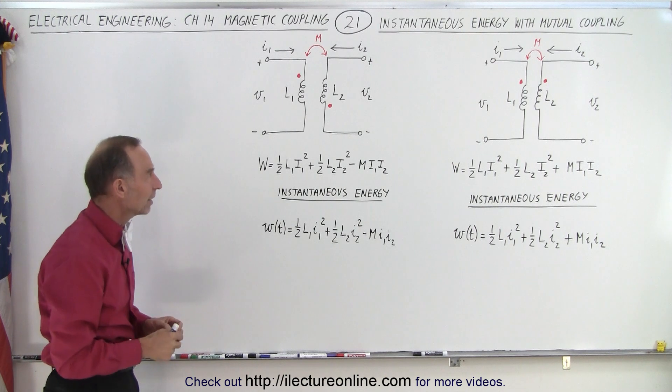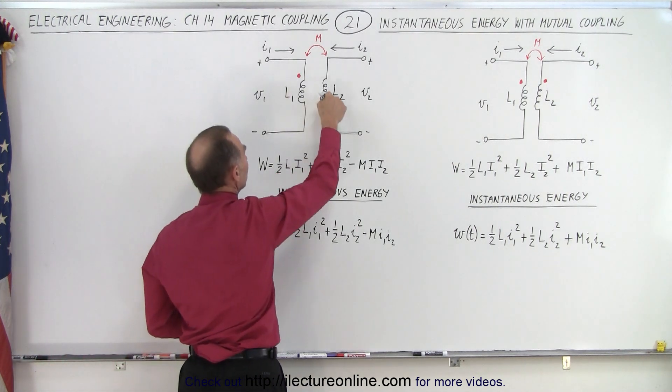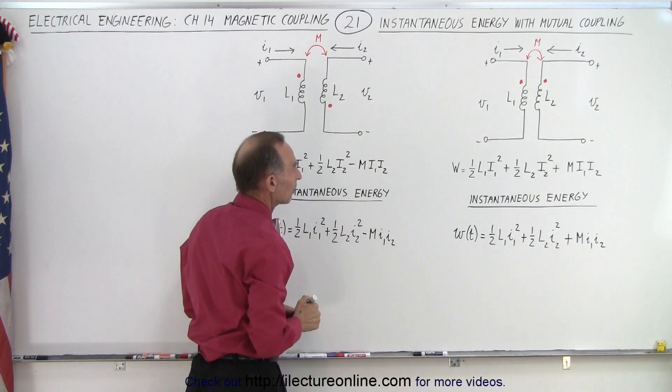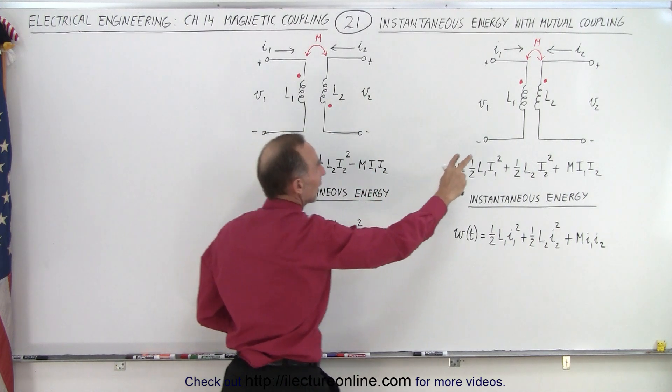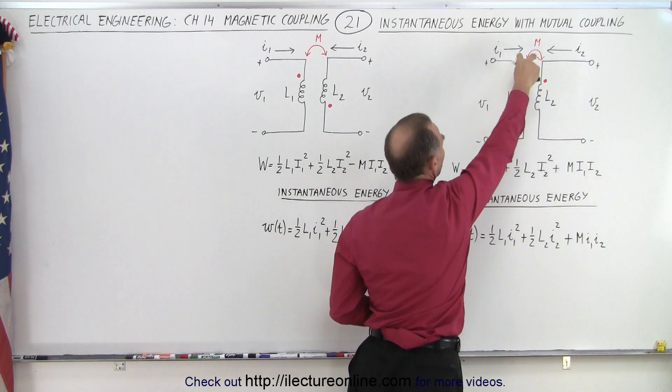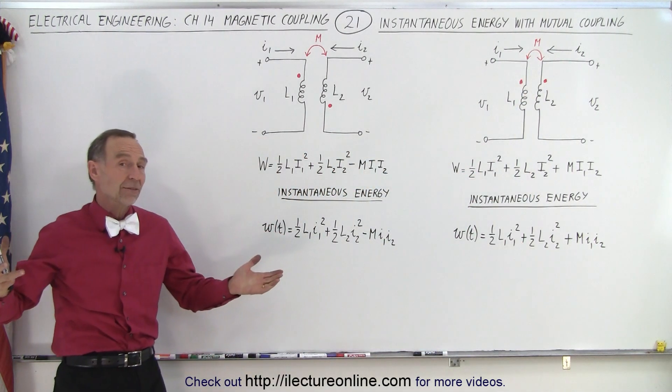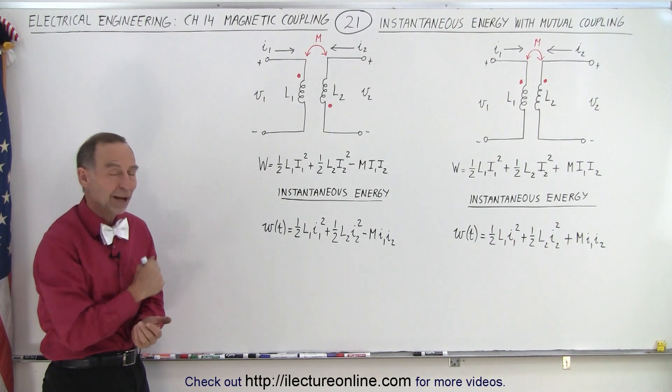So always make sure you understand that if the entry of the current is such that it's dot on one side and on the opposite side for the other inductor, you're going to end up with a negative. If they're both entering on this side or both entering on that side, then you're going to end up with a positive in the equation. And that's as simple as that and that is how it's done.